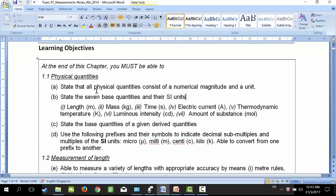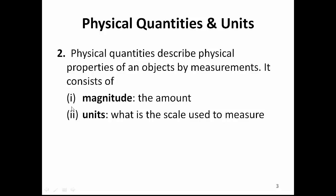Let's look at what are physical quantities. Physical quantities describe physical properties of an object by measurements. It consists of a magnitude, that is the amount. For example, 7 meter long. The 7 is the magnitude, which talks about the size, or the amount, or the magnitude of the length.